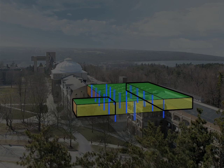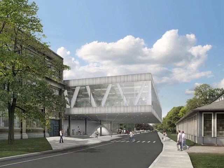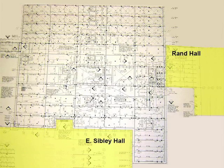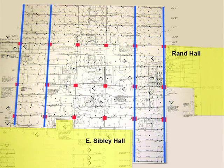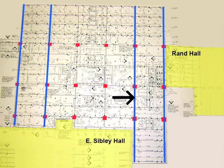To understand how these rather dramatic cantilevers are supported, let's examine the second floor framing plan. A grid of columns is deployed evenly over the site. Then four full-story high trusses, two at each end of the building, project over University Avenue. The east trusses also cantilever in the opposite direction, towards the Arts Quad.